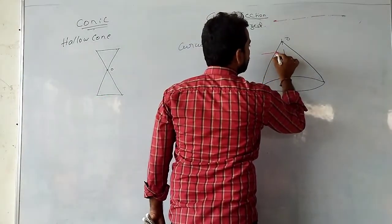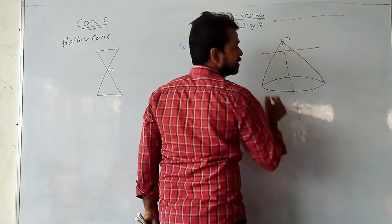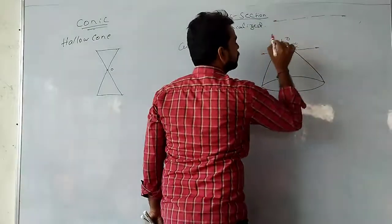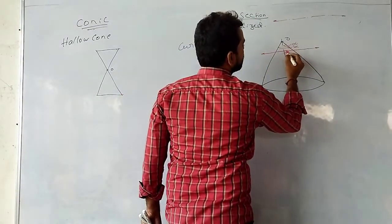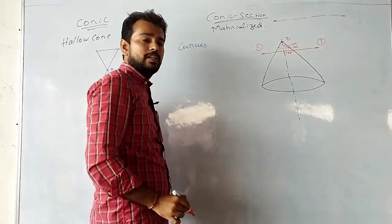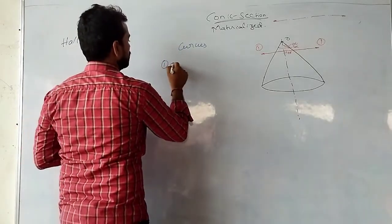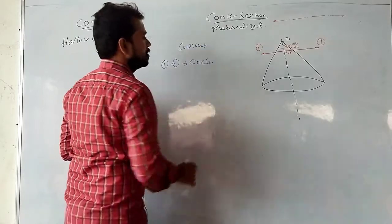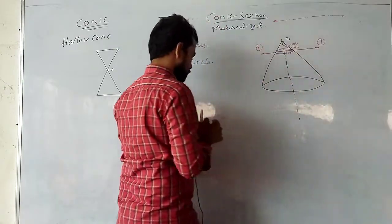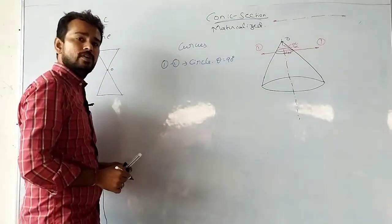I am dividing the cone. When the axis is perpendicular to the sectioning plane — let us call this section 1-1 — then the curve we get is a circle. Here, theta is equal to 90 degrees.